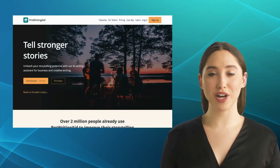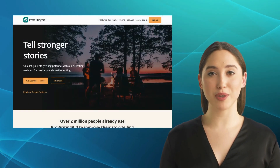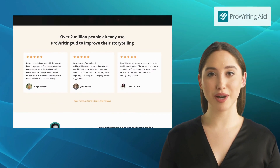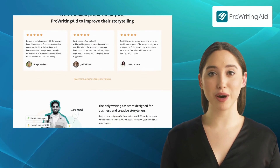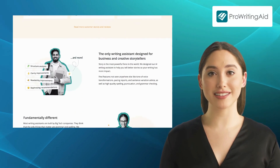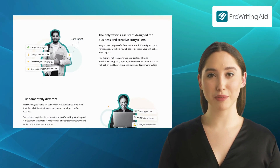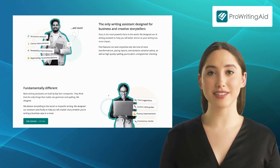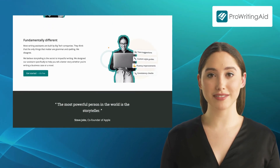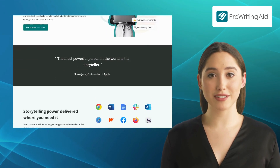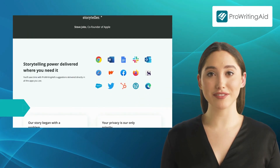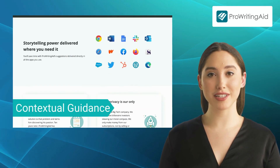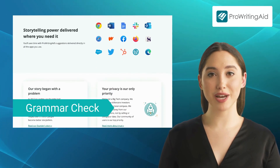Moving on to the third alternative, we have ProWritingAid. ProWritingAid is a comprehensive writing assistant that helps you polish your work to perfection with its advanced grammar and style checking features. It offers features like data visualization, custom dictionary, tone detection, and plagiarism checker.